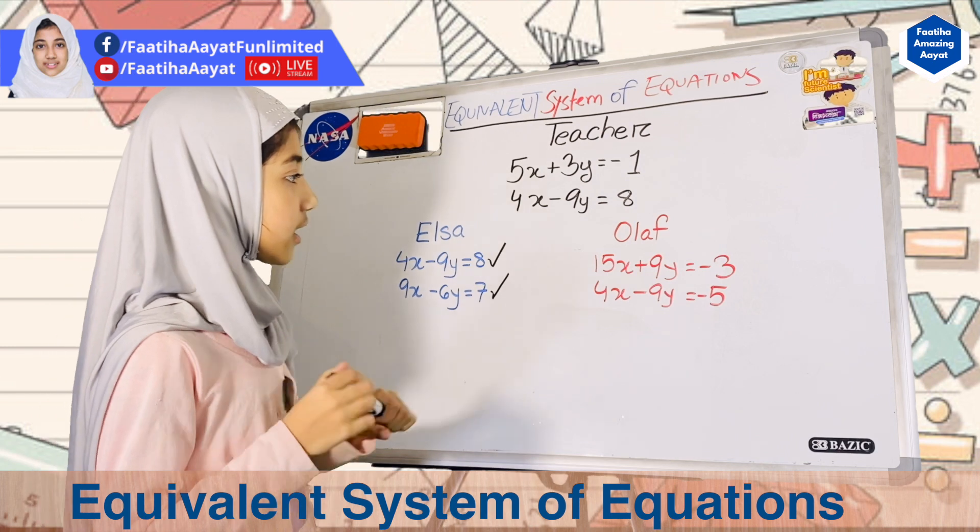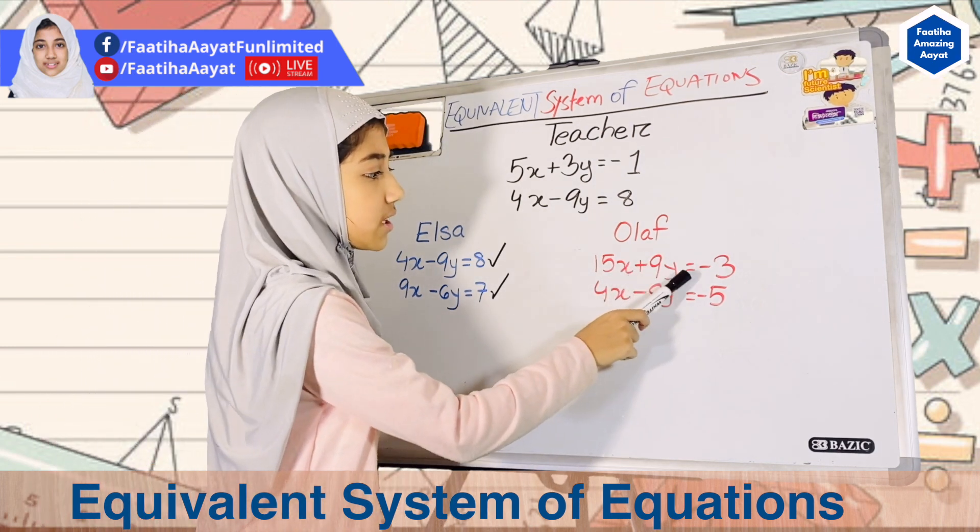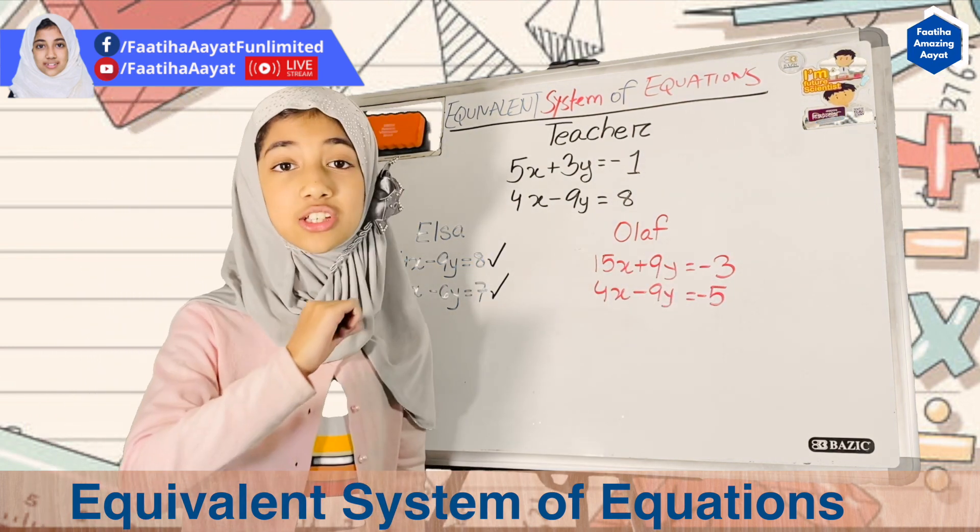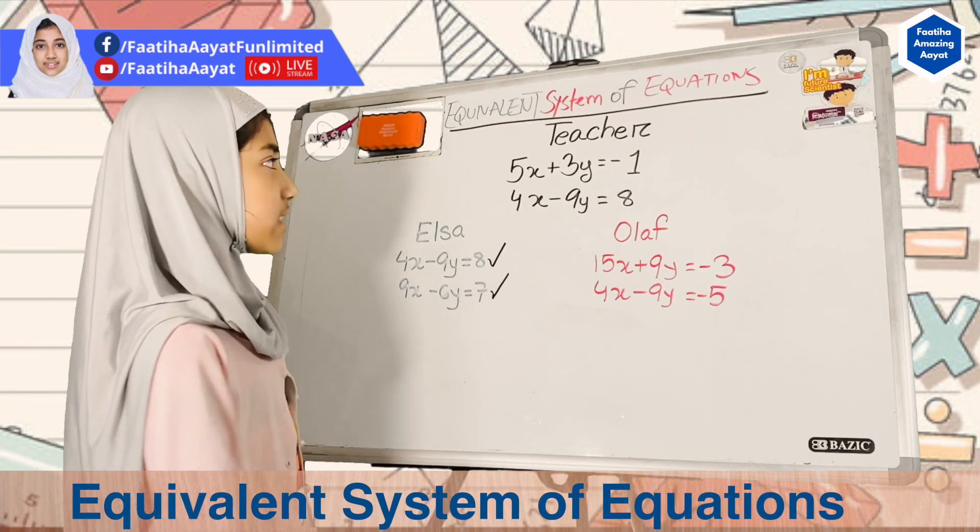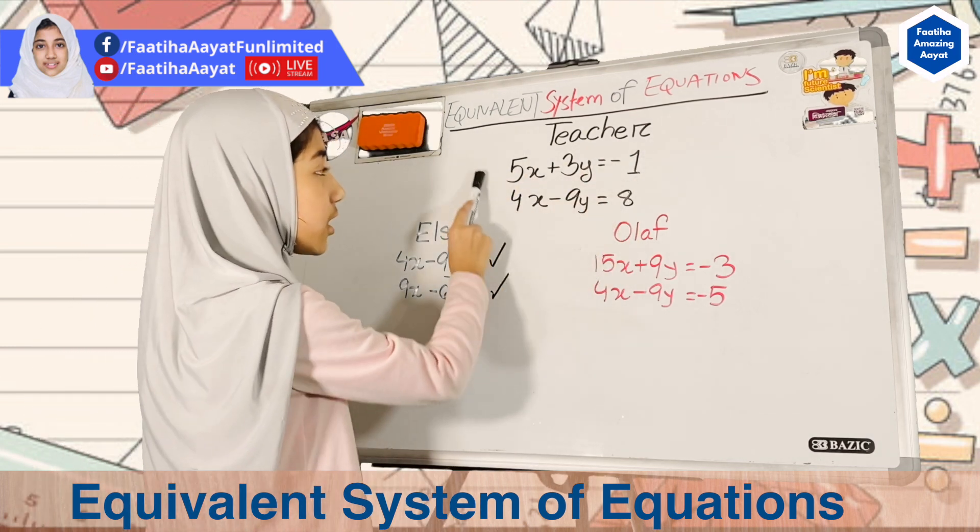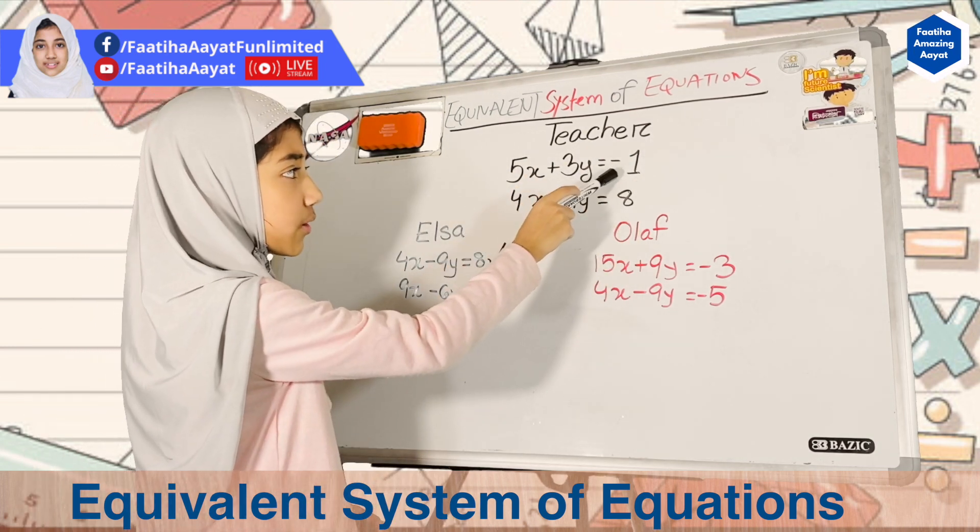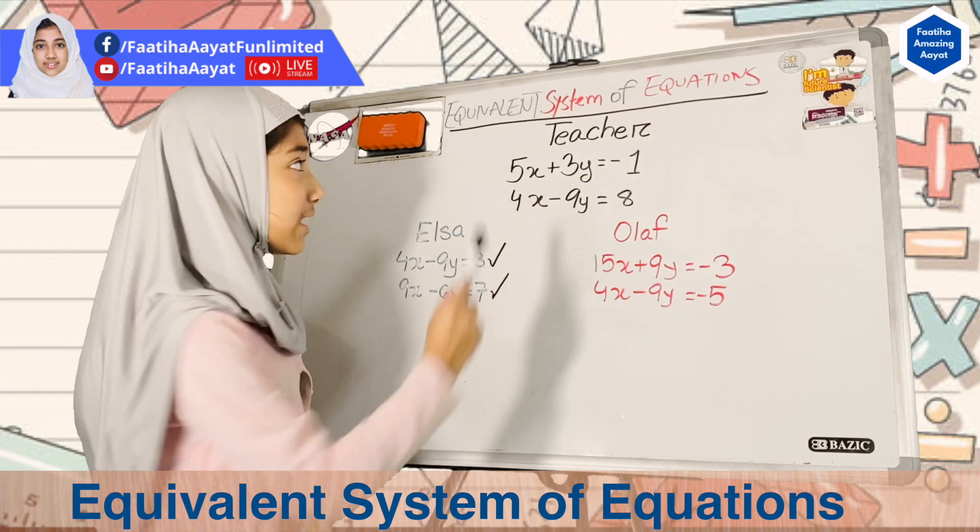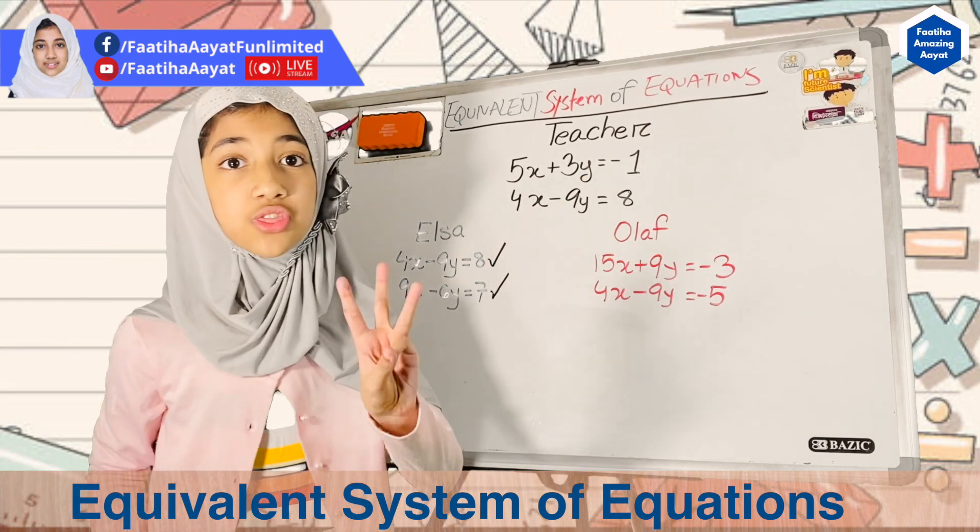Olaf, let's see. He says that 15x plus 9y equals minus 3. I actually think that's correct because he took this entire equation, 5x plus 3y equals minus 1, and he multiplied each of the variables by 3. Let me show you how.